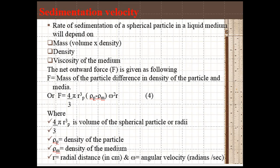Sedimentation velocity is the rate of sedimentation of a spherical particle in a liquid medium and depends upon its mass, density and viscosity of the medium. The net force F is given as: F = mass of particle × difference in the density of particle and media, or F = (4/3)πR³(ρₚ - ρₘ)ω²R, where (4/3)πR³ is the volume of a spherical particle of radius R.